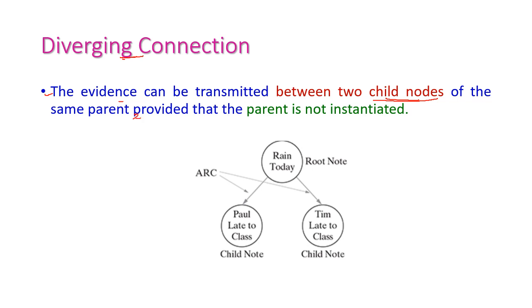In a diverging connection, evidence can be transmitted between two child nodes of the same parent, provided that the parent is not instantiated. In this diagram, this is the parent node, that is the root node, and we have two child nodes: Paul late to class and Tim late to class. They will be late to class only based on the rain of that particular day. This type of connection is called a diverging connection.